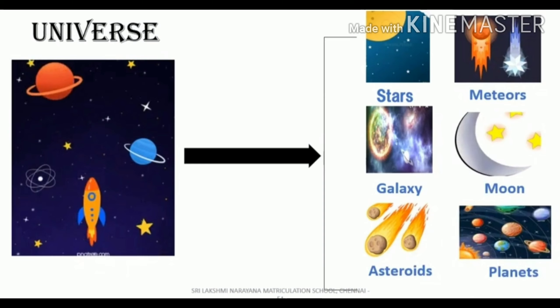But what is universe children? Universe is a vast expansion of space. And this universe consists of stars, meteors, galaxy, moon, asteroids and planets. To be simple, everything is in the universe.